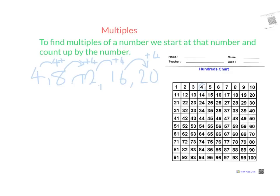So I go 4, and then I count up 4 spaces each time, landing on 8, then 12, then 16. And there we go — the same numbers that we wrote already are getting circled. So those are my multiples of 4. And if you keep going, you can go through the entire 100s chart and find all the multiples of 4. That's how you find the multiples of a number.